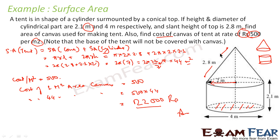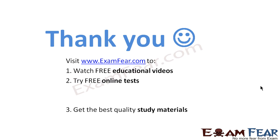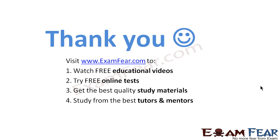Just understand the figure and determine whether it is made up of a cylinder, cone, hemisphere, or cuboid. Break the figure into smaller parts and then find the surface area, being careful about any overlapping or hollow surface areas. Visit examfear.com to watch free educational videos, try free online tests, and get the best quality study materials. Thanks once again.